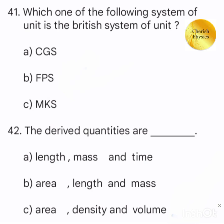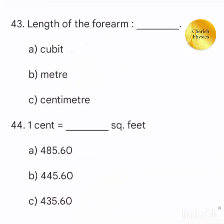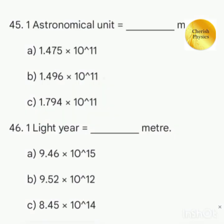Which of the following system of unit is the British system of unit? The derived quantities are. Length of the forearm is. One cent equal to dash square feet. One astronomical unit is equal to dash meter.